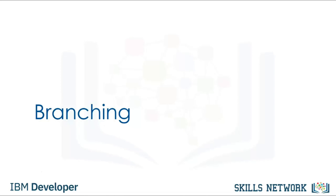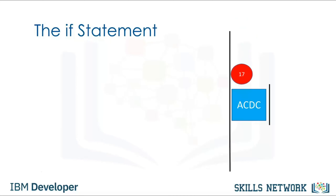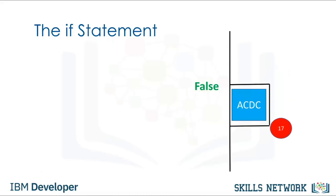Consider the blue rectangle representing an ACDC concert. If the individual is 18 or older, they can enter the ACDC concert. If they are under the age of 18, they cannot enter the concert. An individual proceeds to the concert — their age is 17, therefore they are not granted access and must move on. If the individual is 19, the condition is true and they can enter the concert.